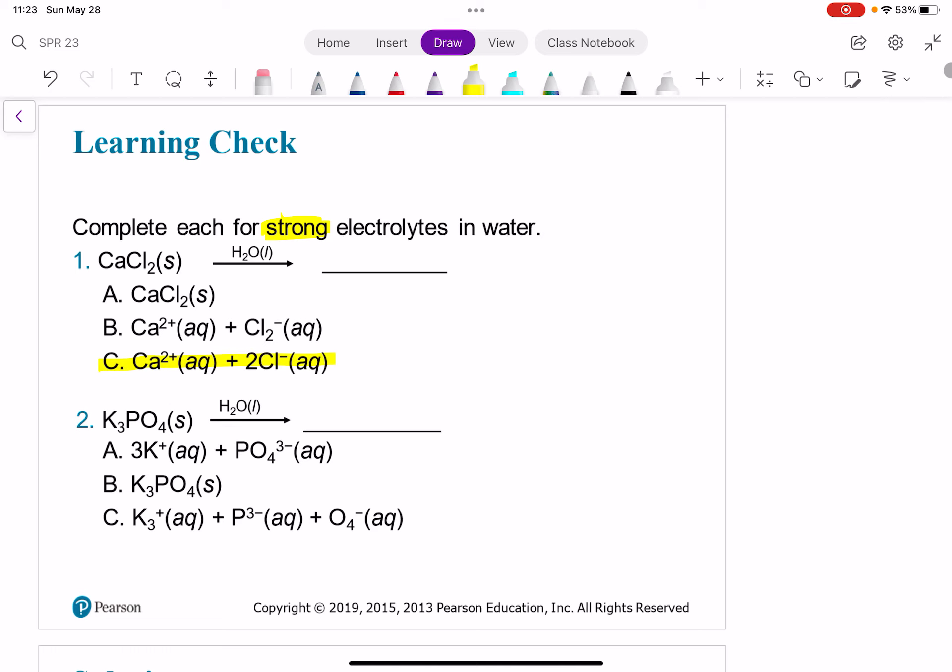All right, if you said C, you would be correct. Why is that correct? Well, we know that it dissociates in water. It's a strong electrolyte. It's going to 100% dissociate in water. So it can't be A. We're not going to get the same thing out.